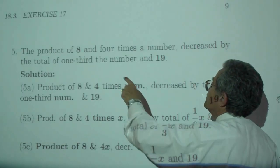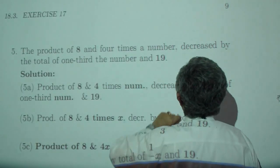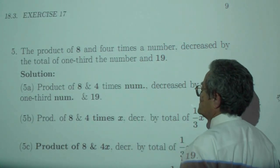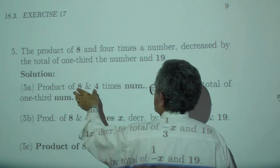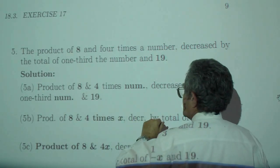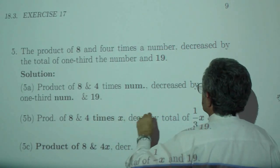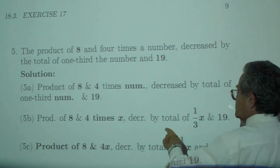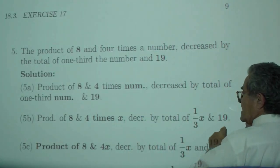Then the product of 8 and 4 times the number decreased by the total of 1/3 the number and 19. The product of 8 and 4 times the number, where the number is x, decreased by the total of 1/3 the number and 19.